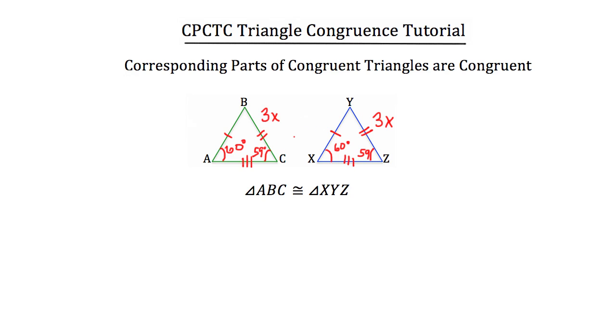We know that corresponding parts of congruent triangles are themselves congruent. So when proving triangle theorems later you can always use CPCTC to establish that those corresponding parts of those congruent triangles are congruent to each other.